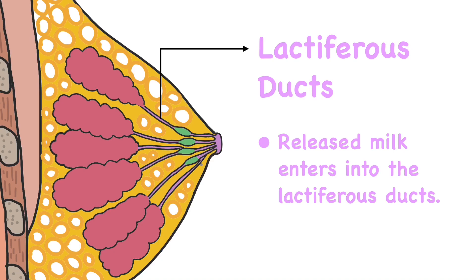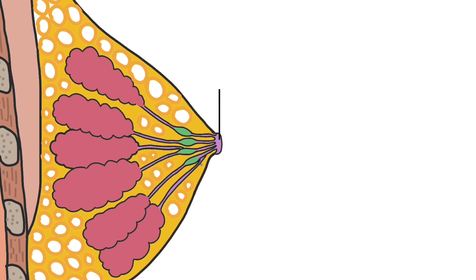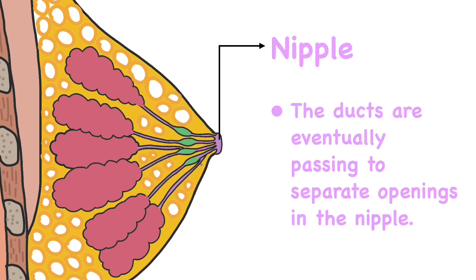That released milk enters into a series of lactiferous ducts, which are tube-like structures. Then each duct has an expanded space called a lactiferous sinus. There are several sinuses in the breast and they store milk. You can clearly see the expanded sinuses in the diagram. The ducts eventually pass to separate openings in the nipple. These structures all function together in the process of lactation.